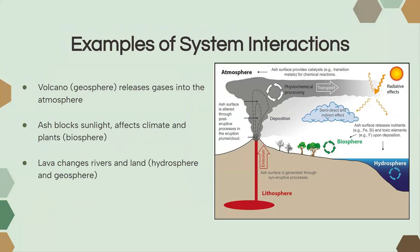So let's talk about an example. Say a volcano erupts. That volcano erupting would be our geosphere or the lithosphere. And when that volcano erupts, it releases volcanic ash and gases to the atmosphere. This is how our lithosphere or geosphere is connected to and impacts our atmosphere.